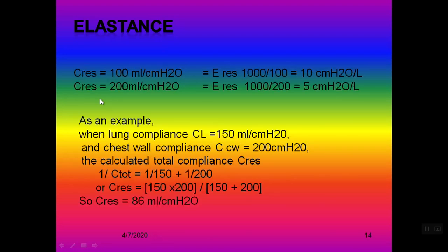For examples: if compliance of the respiratory system is 100, elastance equals 1000 over 100 = 10 cmH₂O/L. If compliance is 200, elastance equals 1000 over 200 = 5 cmH₂O/L. Another example: when lung compliance is 150 and chest wall compliance is 200, the total compliance equals 1 over (1/150 + 1/200), or lung compliance multiplied by chest wall compliance over their sum.